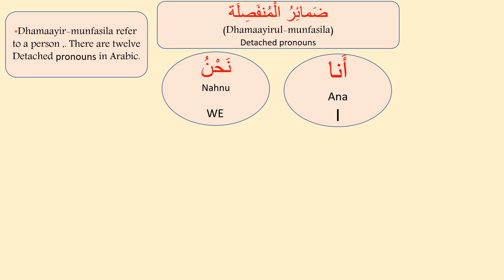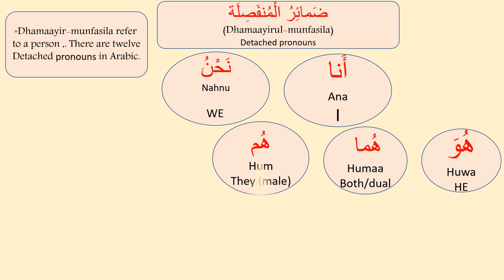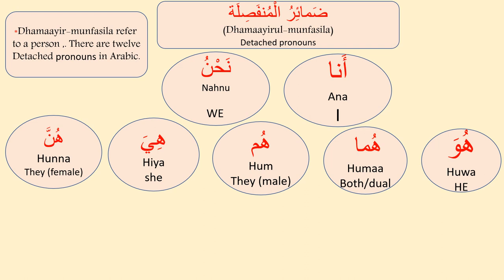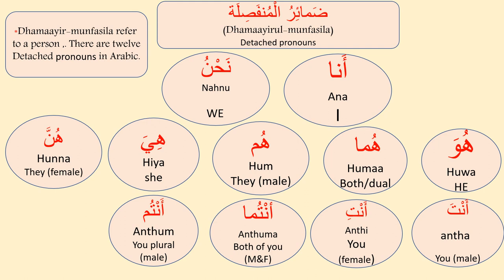The twelve detached pronouns are: Ana meaning I, Nahnu meaning we, Hua meaning he, Huma meaning both or dual, Hum meaning they for male, Hia meaning she, Hunna meaning they for female, Anta meaning you for male, Anti meaning you for female, Antuma meaning both of you for male and female, Antum meaning you plural for male, and Antunna meaning you plural for female.